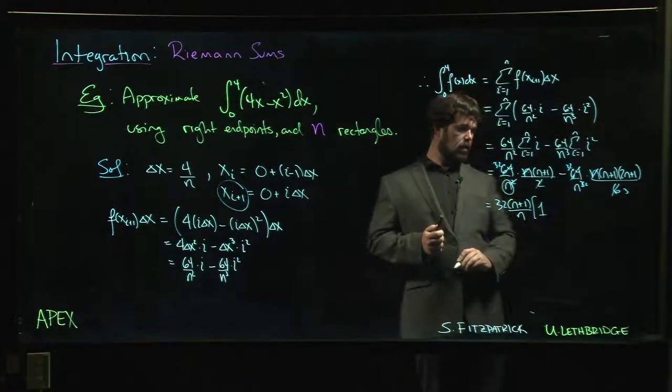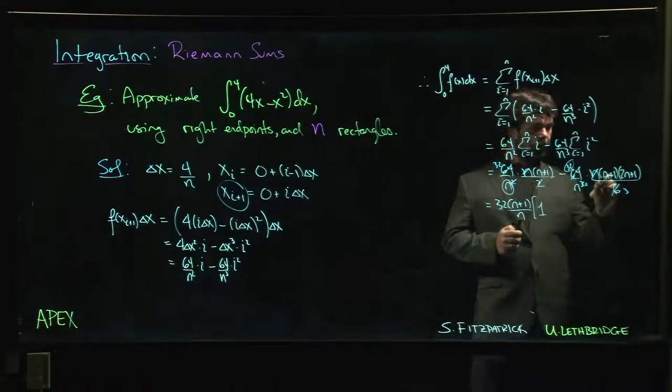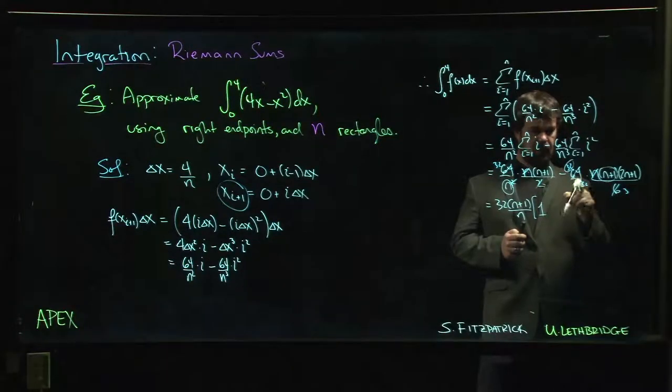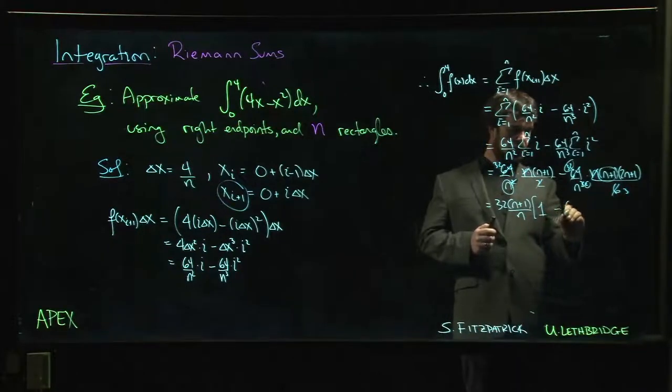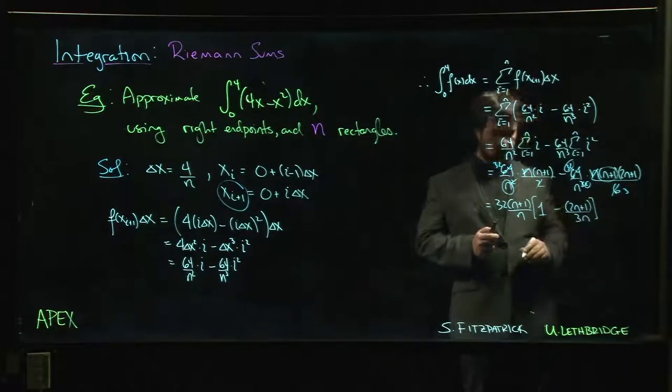What's left over here? So the 32 I took out, n plus 1 I took out, there's still an n left because there's two of them, n squared. So I have 2n plus 1 over 3n left over.